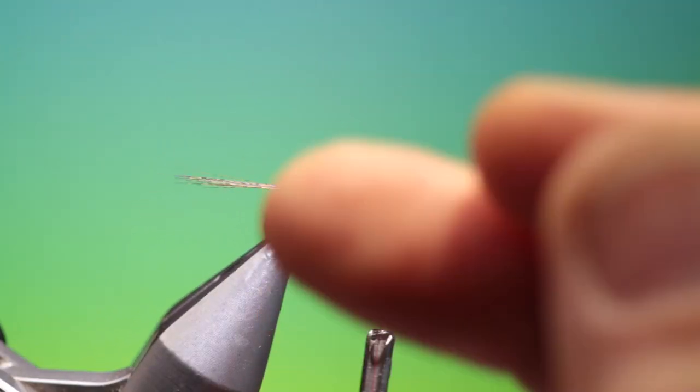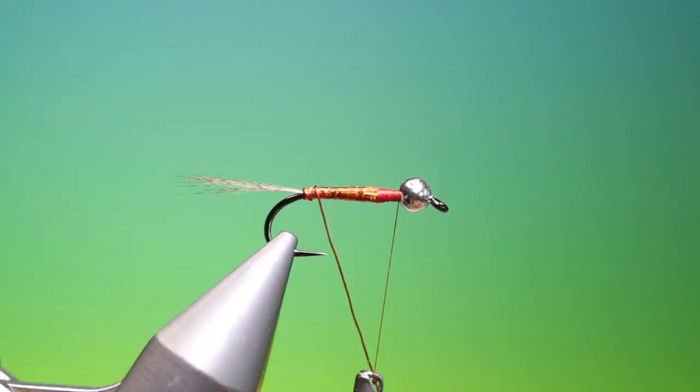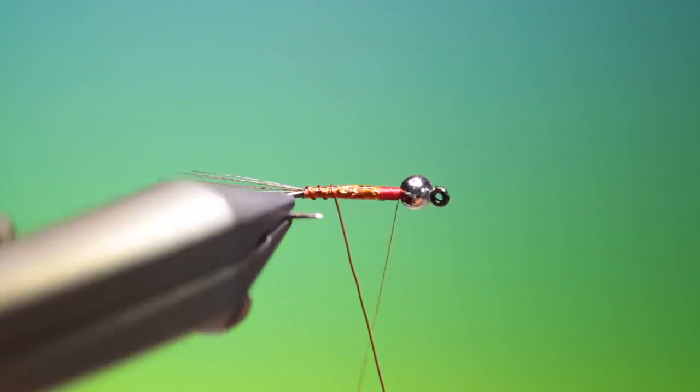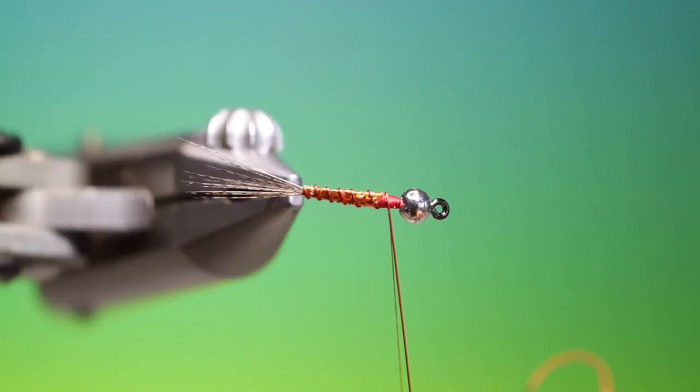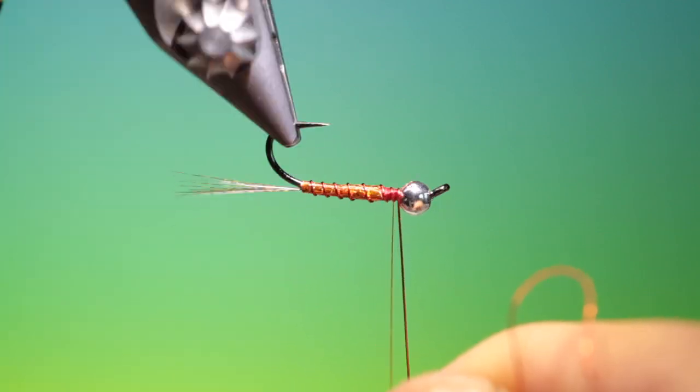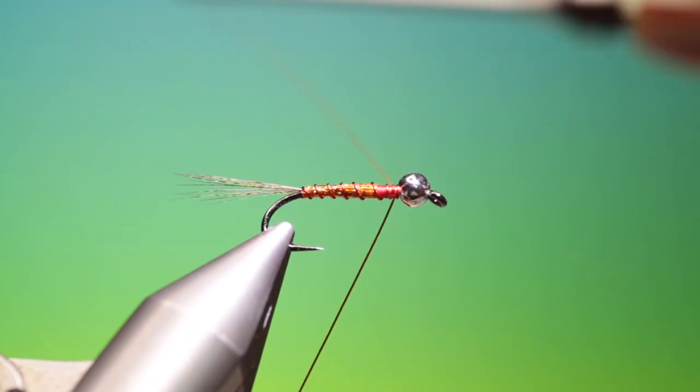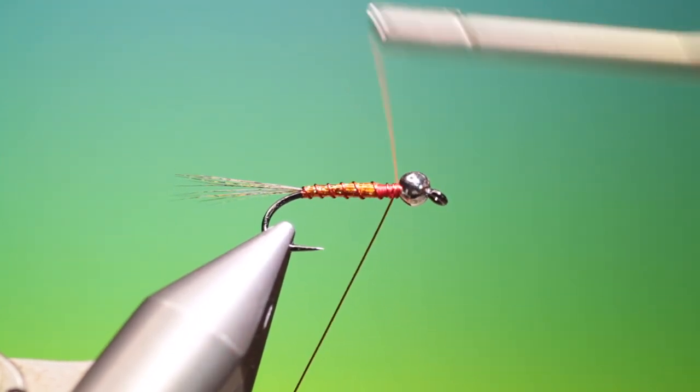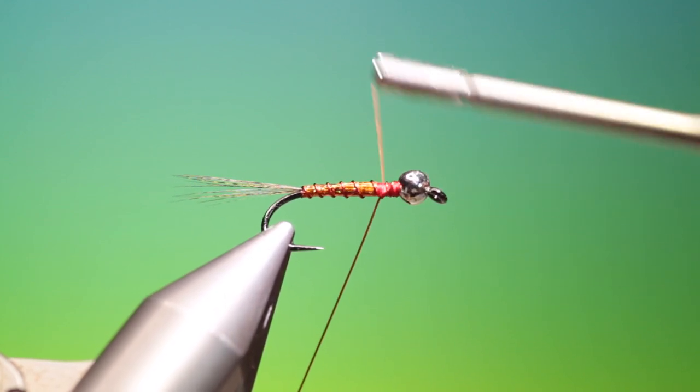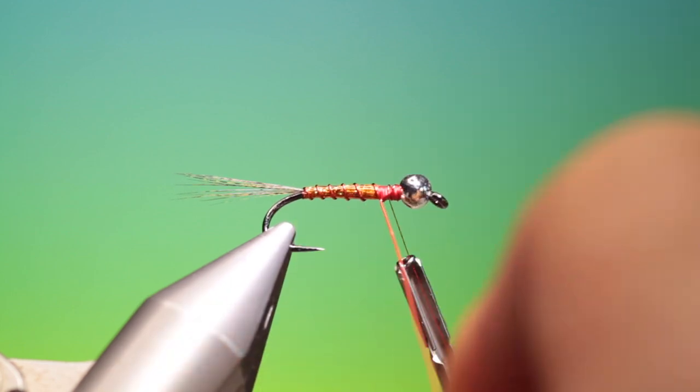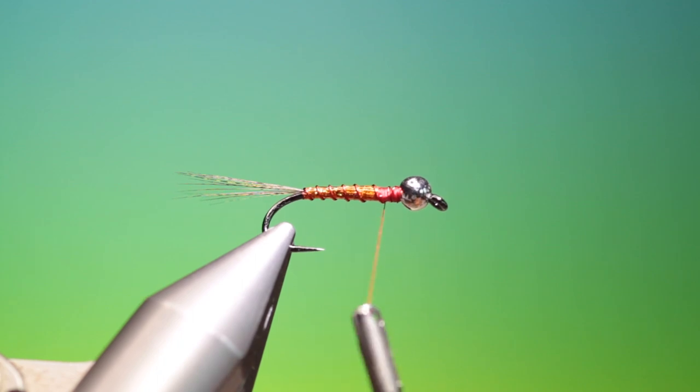And we take our rib. We want to go the opposite way that we went with the holographic tinsel. We go up the body like this and give it a little bit of extra weight at the head. Cross over and go back to the abdomen. Then we can remove this with friction.